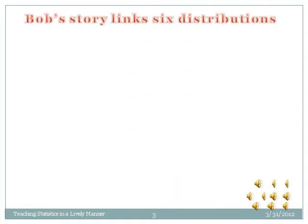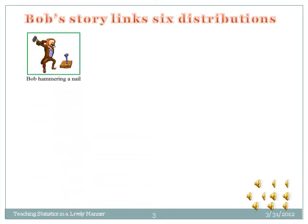Let us tell you how Bob's story can link these six distributions. Bob appears in an interview with a company, Trust Our Nailers. He is given a single chance to hit a nail — either he will hit it or he will miss it. When a random variable x takes only two values, 1 for a success with probability p, or 0 for a failure with probability q, such a random variable follows the Bernoulli distribution with parameter p.